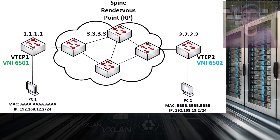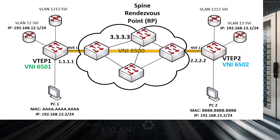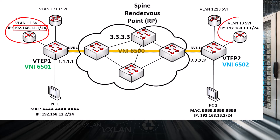As a quick reminder of the concepts involved in this Layer 3 operation: we'll be creating a transit VNI, which we will designate VNI 6500. Within each VTEP, we'll create the SVI that will act as the default gateway. On VTEP1, that's VLAN 12 with its IP address, and on VTEP2, that's VLAN 13 with its IP address.